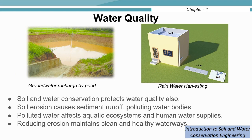Soil and water conservation practices can protect water quality. By adopting groundwater recharge and rainwater harvesting, we can ensure water does not get contaminated. Polluted water affects aquatic ecosystems as well as human water supplies. If using roof rainwater harvesting, the roof should be properly cleaned before water enters the tank. It is recommended to flush the first and second rainfall events, and then allow water into the tank so that foreign particles settle and clean water can be used for drinking and irrigation.